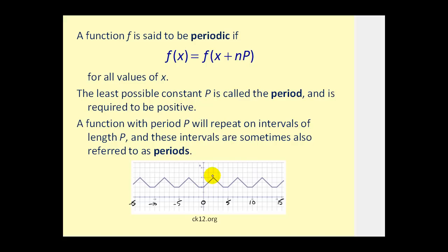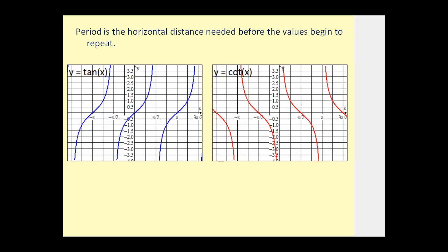For the function shown here, after five units it repeats itself, and therefore the period of this function is equal to five. This video assumes you're comfortable with the graphs of the basic tangent and cotangent functions. For y = tan(x), from negative pi over two to pi over two the function repeats itself, and therefore the period is pi radians.